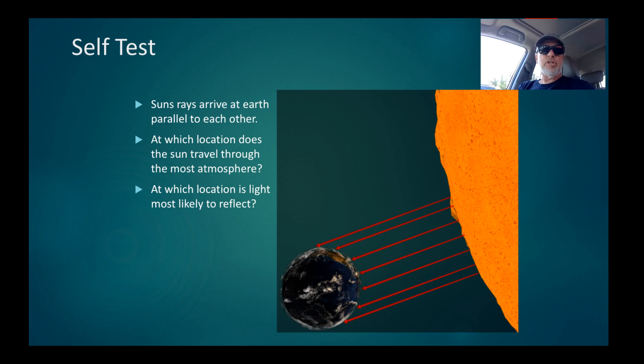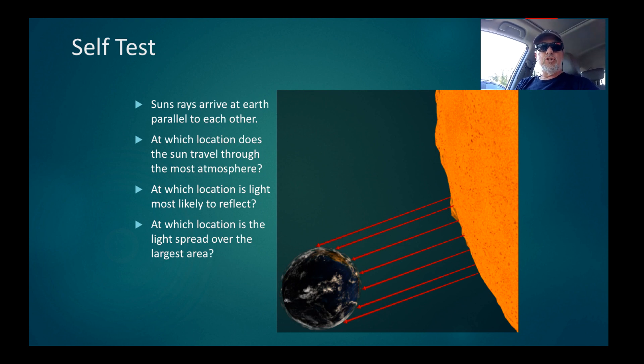Question three: at which location is the light spread over the largest surface area? Is it at the equator, at the poles, or somewhere in between? If you said that it's spread over a larger area at the poles, give yourself a gigantic, humongous pat on the back. And if you've got all three, just jump up and down, run around the room, and high-five everything you can find.